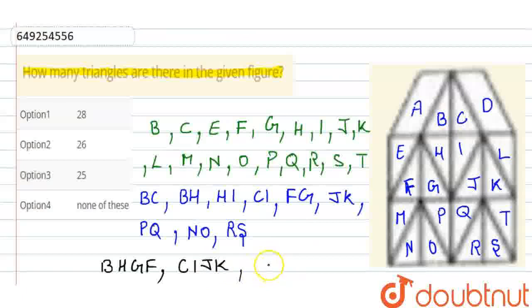Then again, a larger triangle is. B, C, H, I, F, G, J, K. It's a larger triangle. Okay. This was the end.